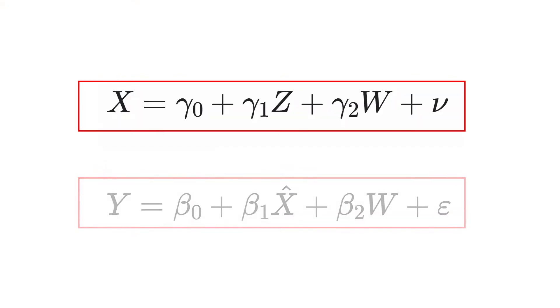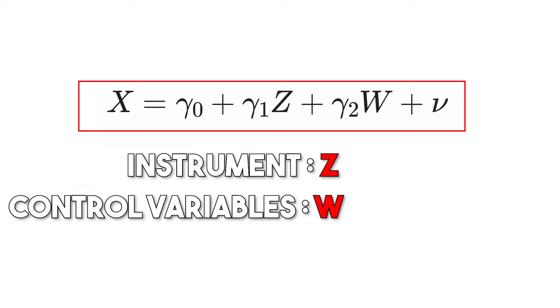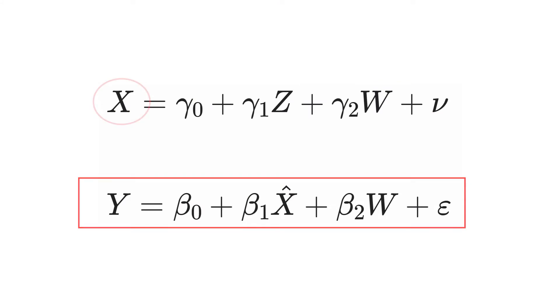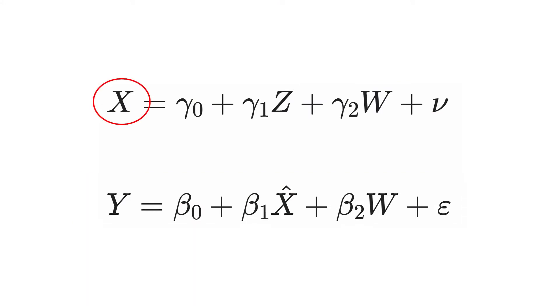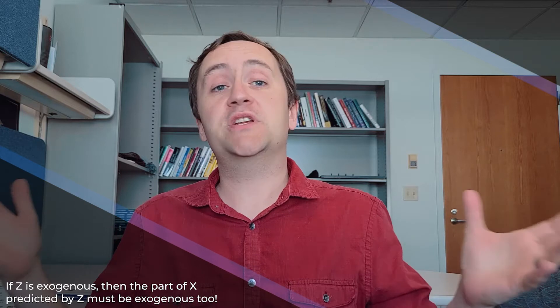We have two equations. In the first, we use our instrument z and control variables w to predict treatment x via regression, getting predicted values that represent only the part of x predicted by the instrument and controls — that is, our exogenous variation. We then take that predicted value x-hat and plug it into the second stage, regressing y on x-hat and w instead of the original x.